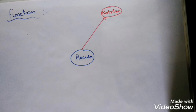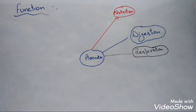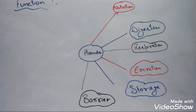Now, the functions of placenta. The placenta performs different types of functions. Number one is nutrition — the fetus always obtains its nourishment from the uterine tissue by means of placenta. The second function is digestion — the trophoblast cells of the placenta digest protein before passing them into the fetal blood. The third is respiration — the exchange of gases between the maternal tissue and the fetus takes place by means of placenta, with intake of carbon dioxide from the fetus and provision of oxygen to the developing fetus.